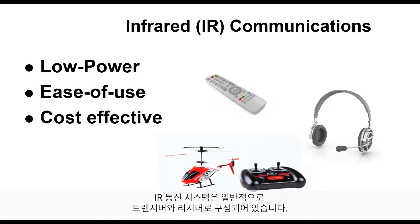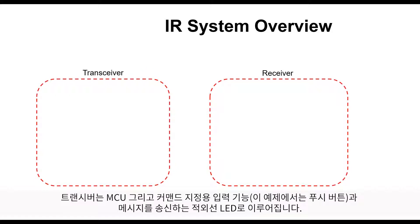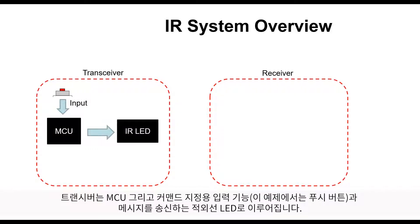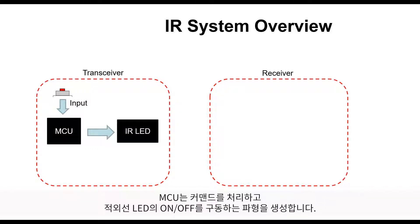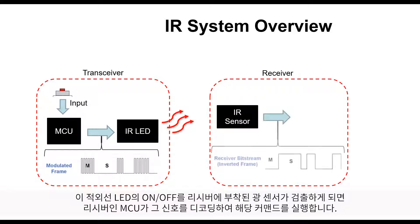IR communication systems generally comprise a transceiver and a receiver. The transceiver consists of a microcontroller as well as some sort of input to specify commands — in our case a push button — as well as an infrared LED that will transmit the message. The microcontroller processes the command and generates a waveform that drives the infrared LED on and off, which are then detected by a light sensor attached to the receiver that allows the microcontroller to decode the signal to determine what command was sent and then fulfill that command.